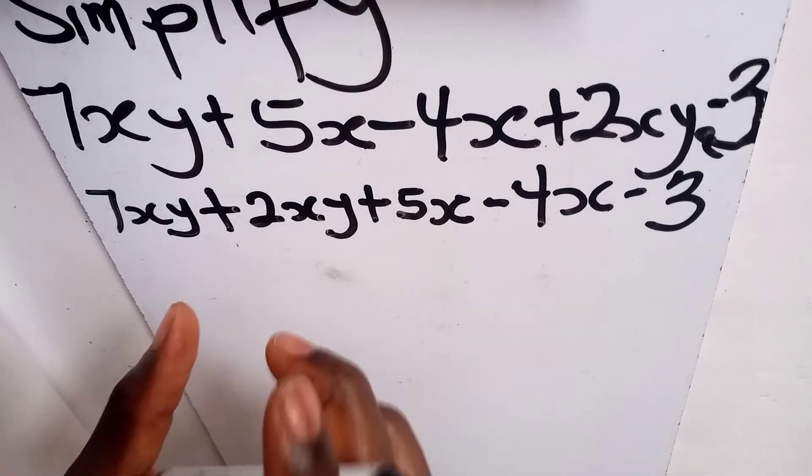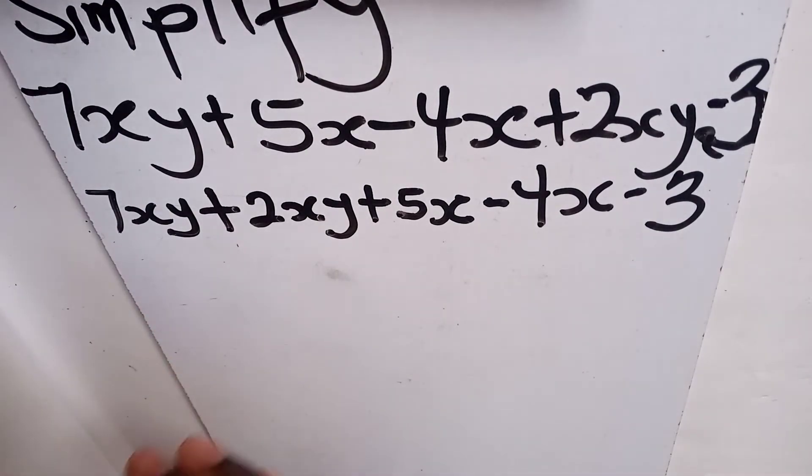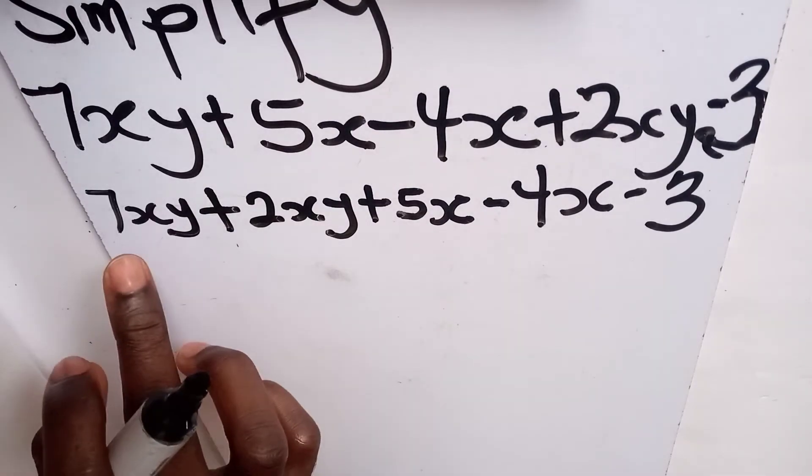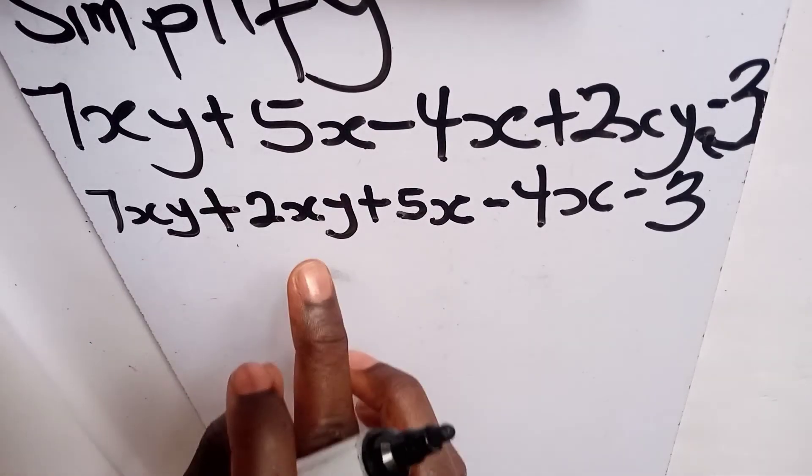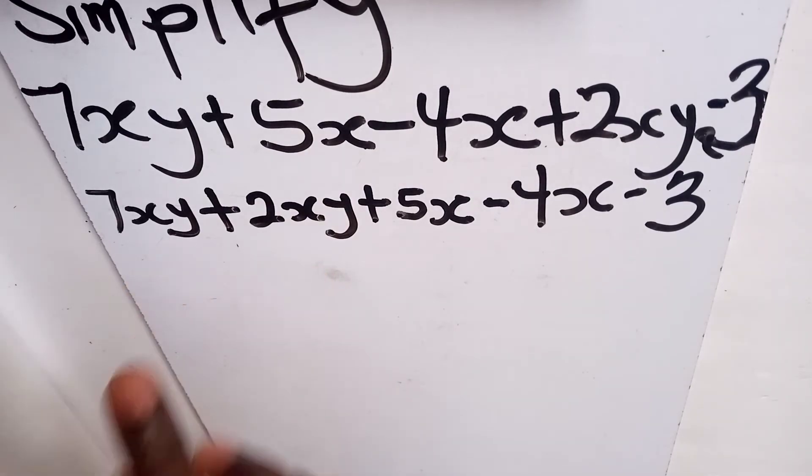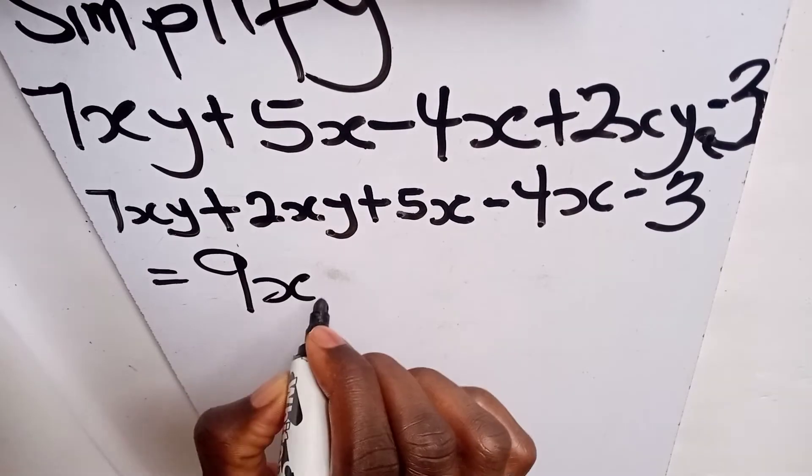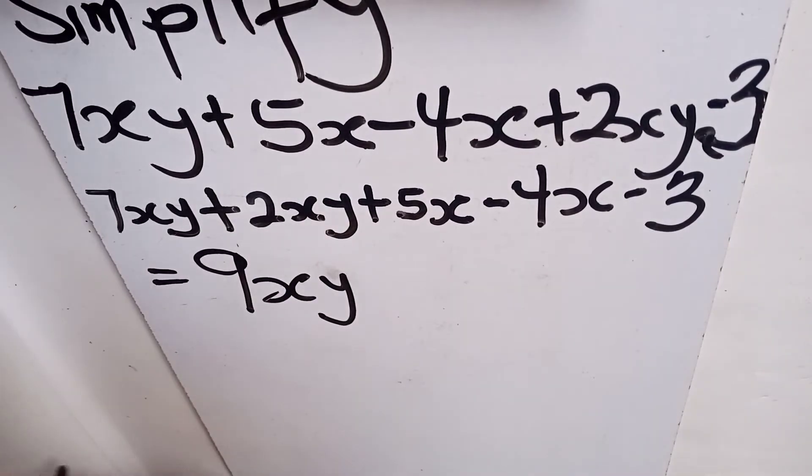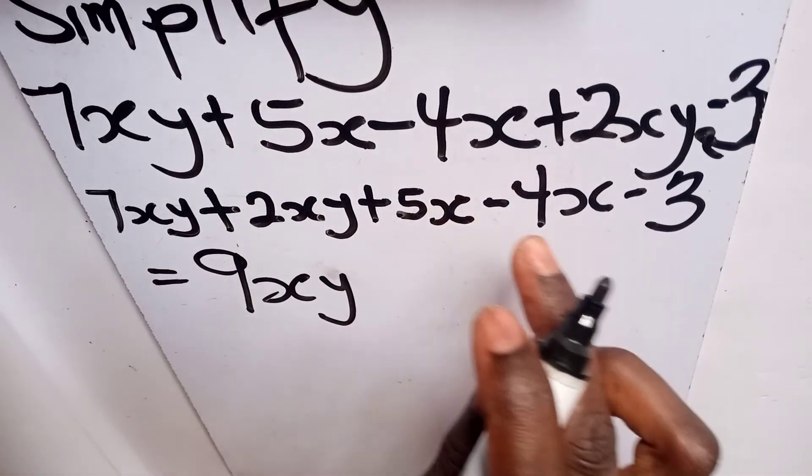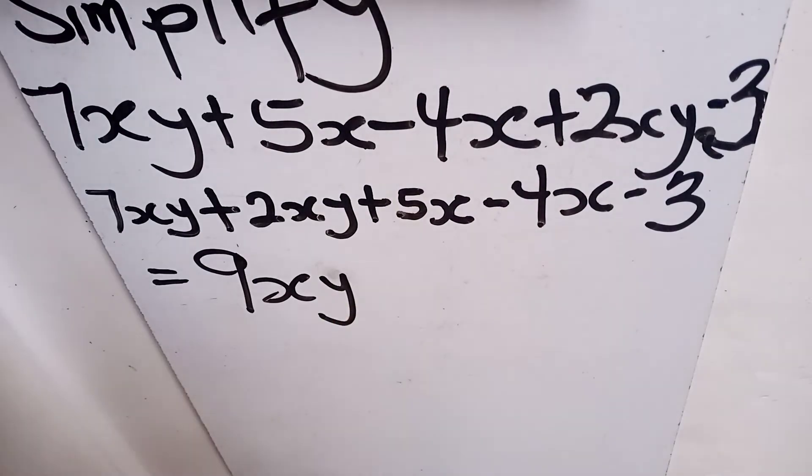After that, then we can add those that are alike together. So let's say we add the like terms. So we have 7xy plus 2xy gives you what? 9xy. So we have 9xy, then 5x minus 4x gives you 1x.